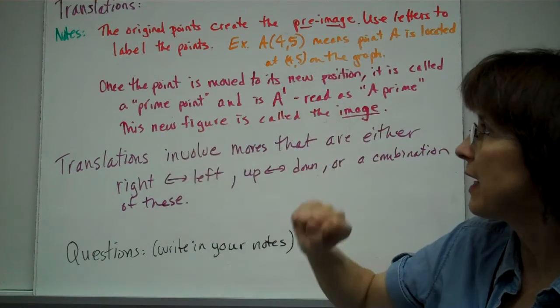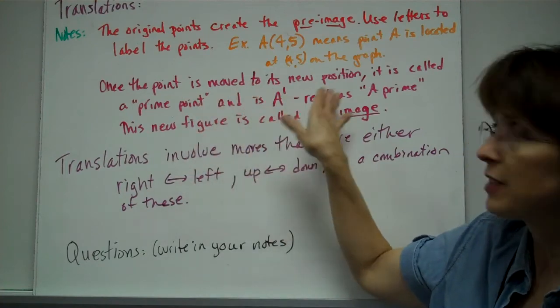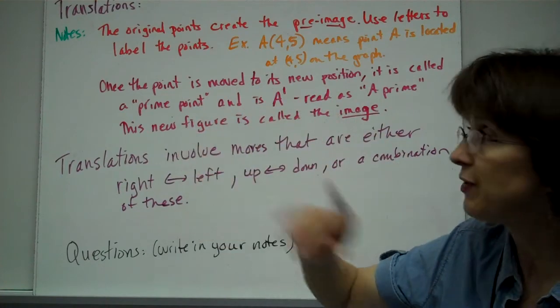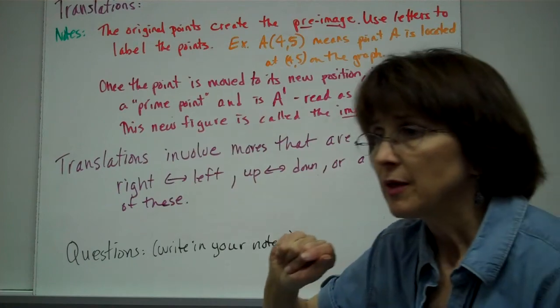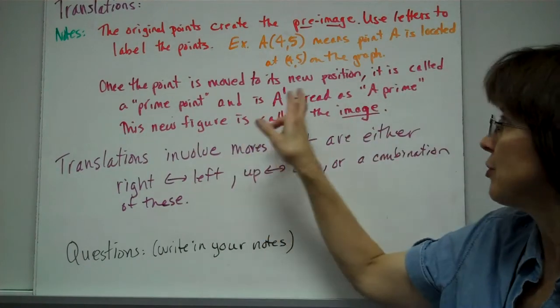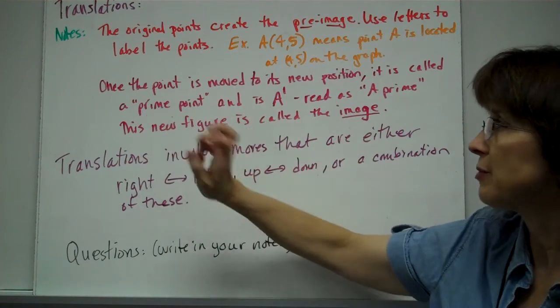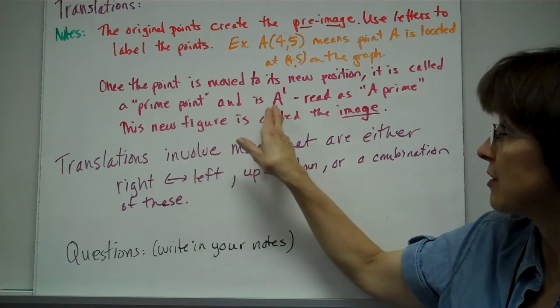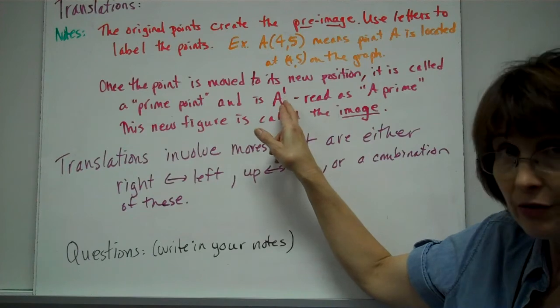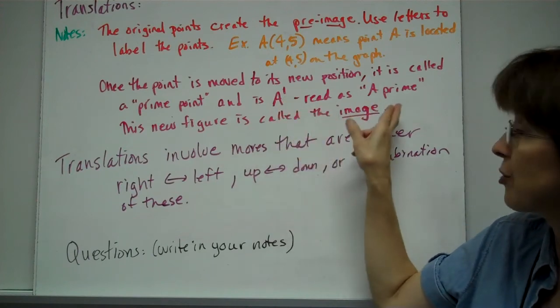Once the point is moved to its new position by a translation, it is called the prime point. It is labeled A with a little line or dash there, and we read it as A prime.